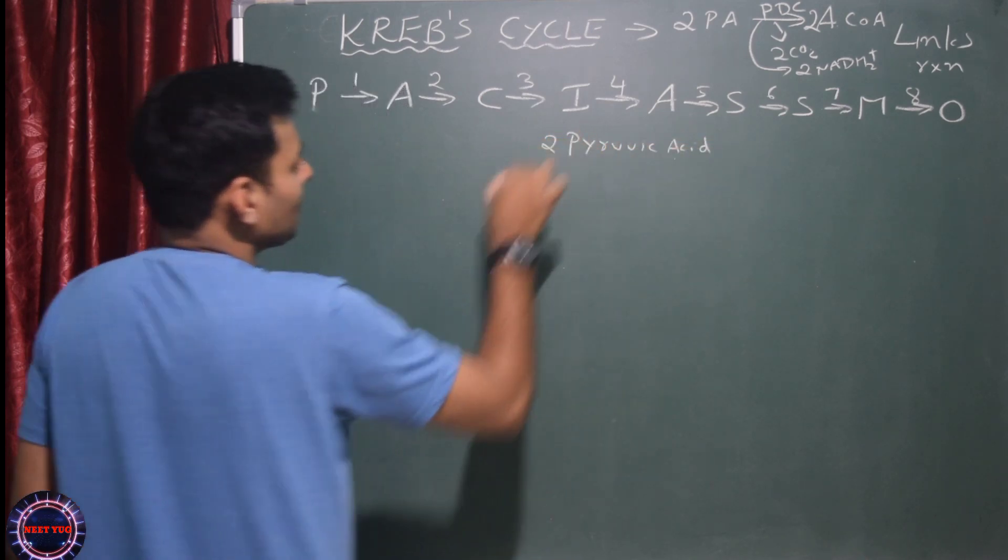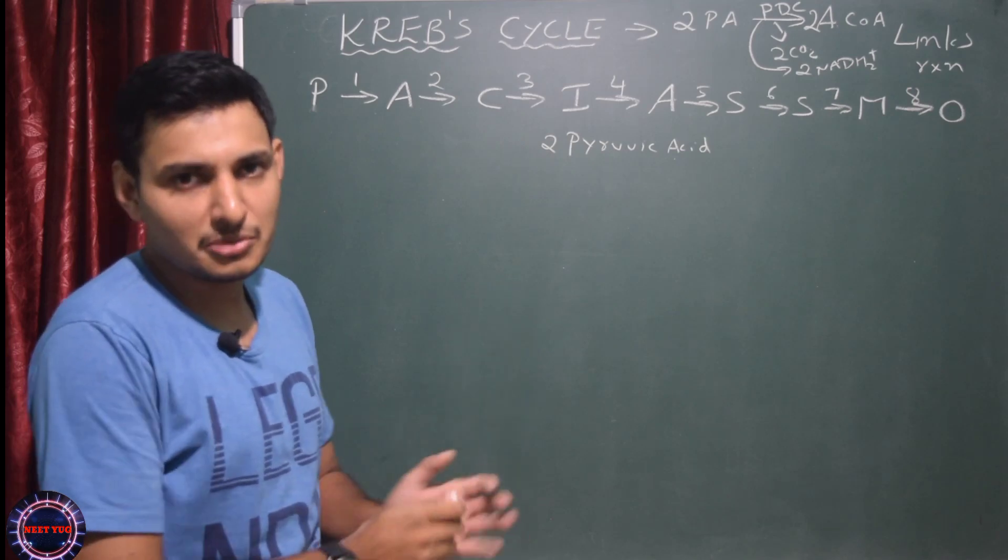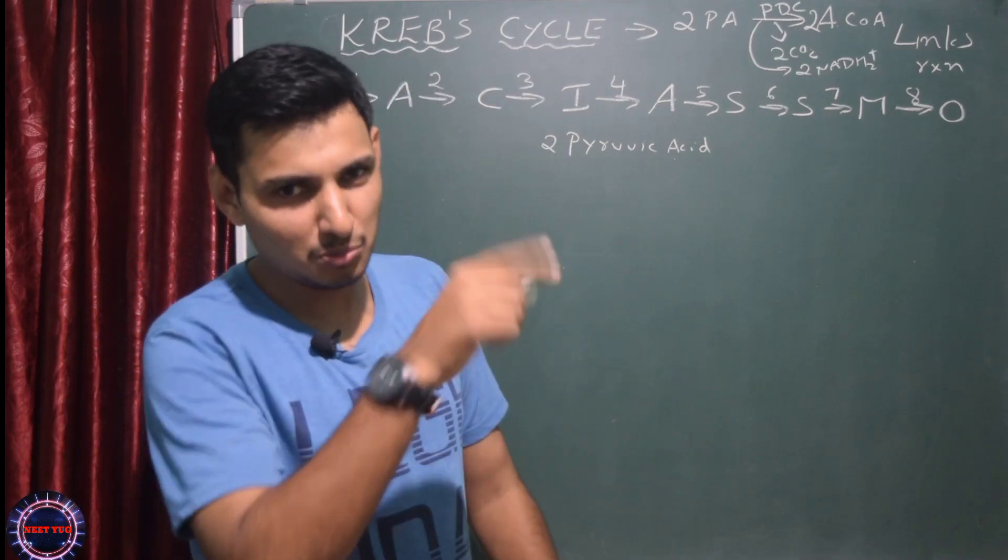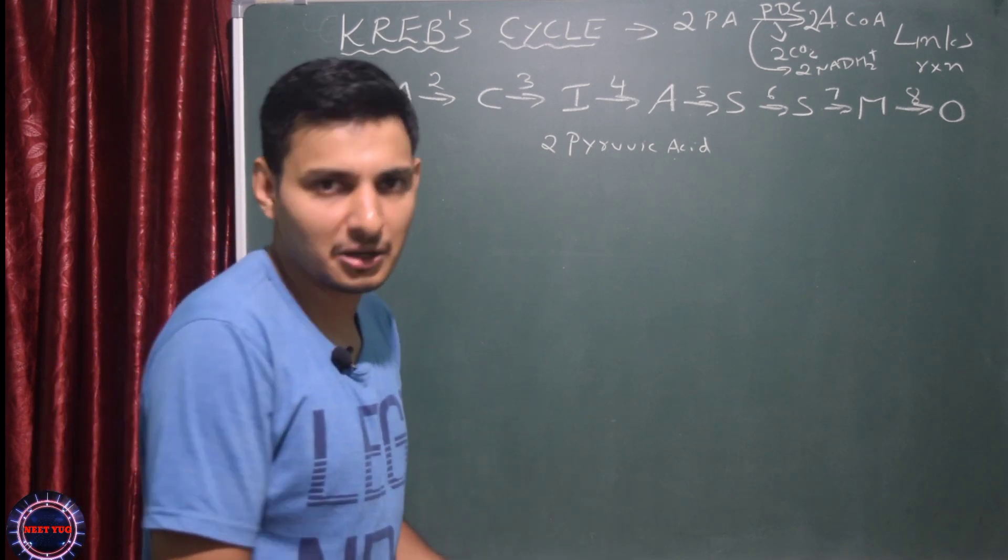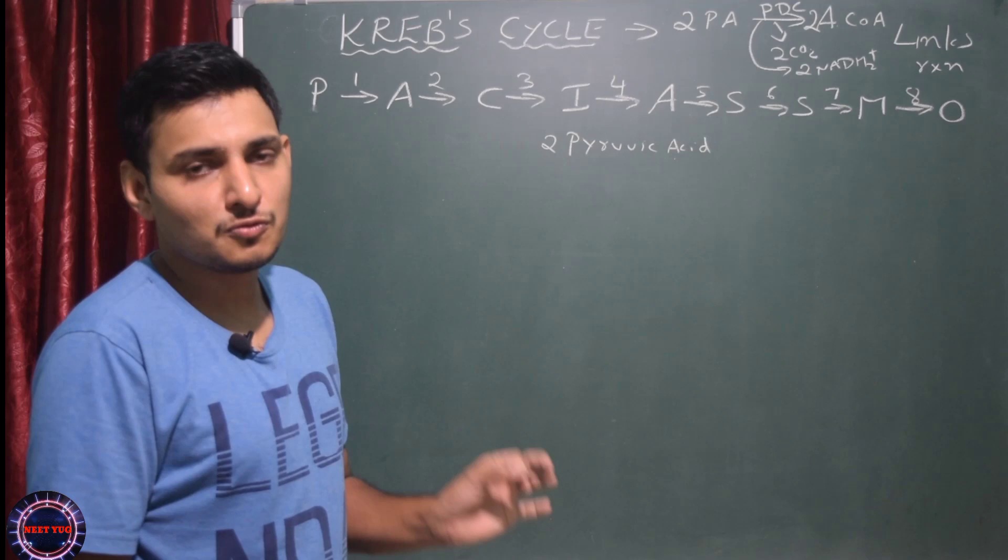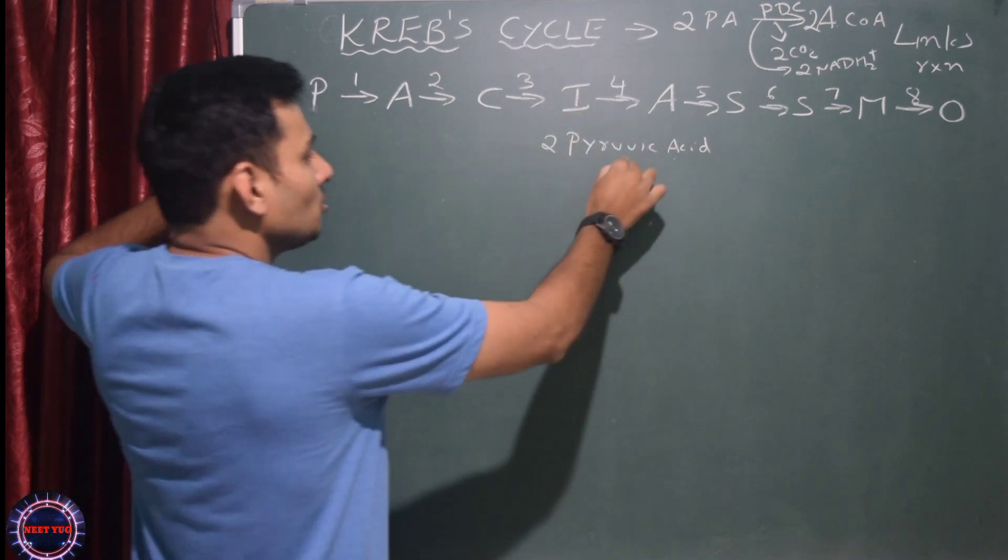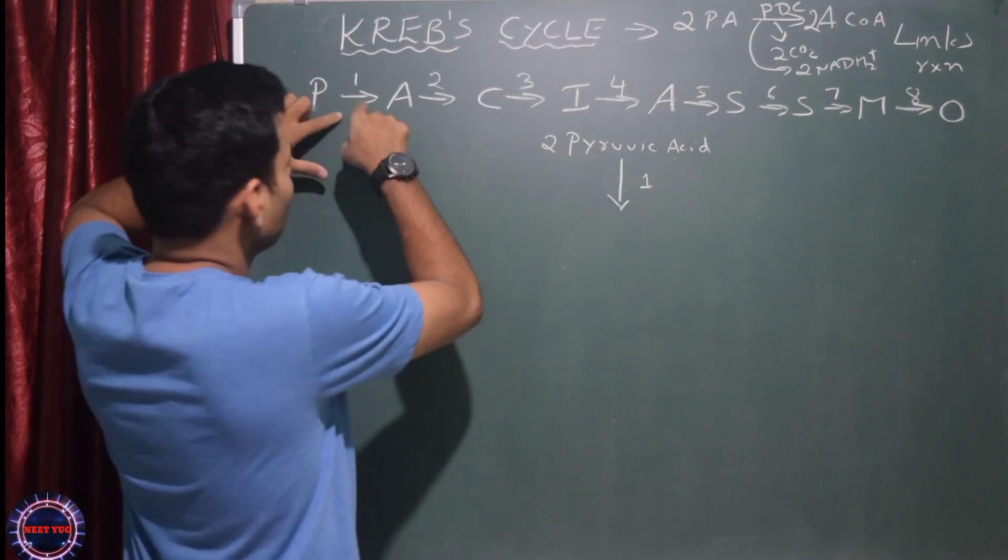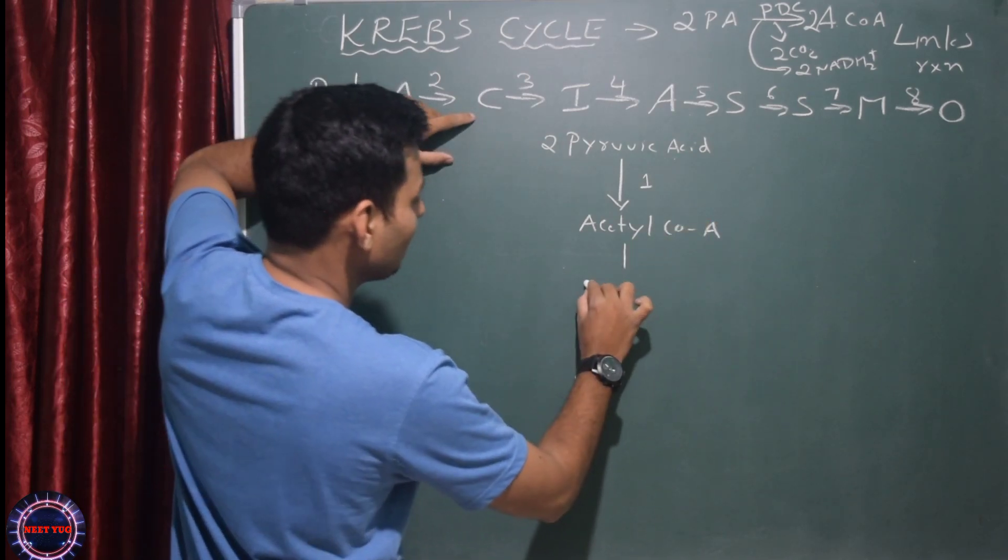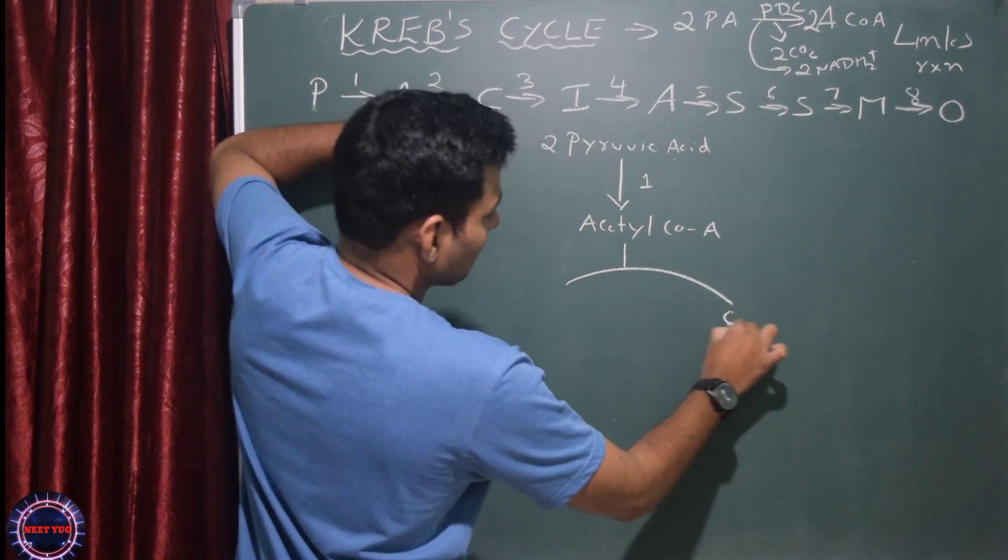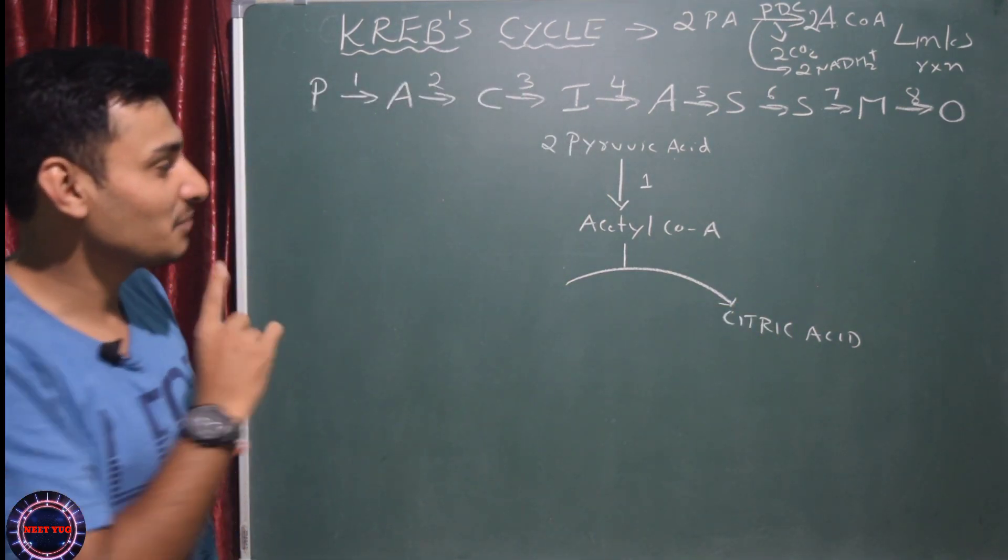Pyruvic acid. We already wrote pyruvic acid when explaining glycolysis. That was step one. So remember: 2 molecules each, 2 pyruvic acids. Now this is in mitochondrial matrix. This undergoes links reaction. This is our step number 1. What do we get? Acetyl coenzyme A.